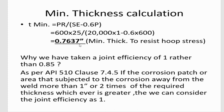The minimum thickness is the thickness required to resist the hoop stress. The equation to determine t_minimum is: P × R divided by (S × E − 0.6P), where P is the design pressure, R is the radius of the vessel, S is the allowable stress given in ASME Section 2 Part D, and E is the joint efficiency.